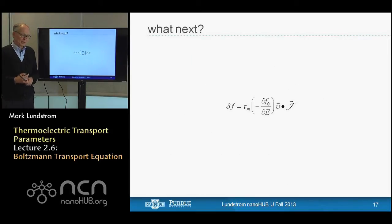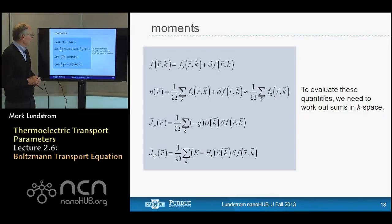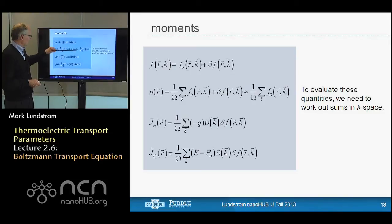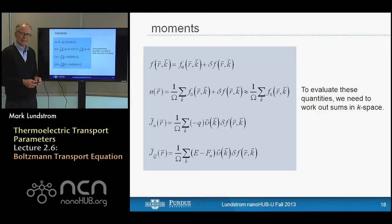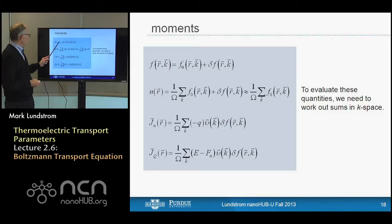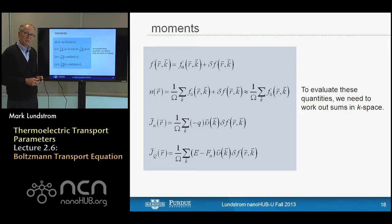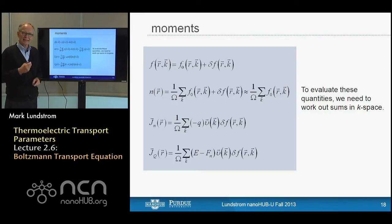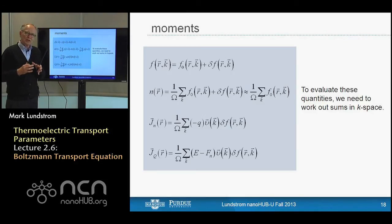Our solution to the Boltzmann equation has this form: tau_m times minus dF0/dE times velocity dot a generalized force. One of the things you'll notice is that there's more mathematics involved than in the Landauer approach. The quantity with units of force is minus the gradient of the electrochemical potential, plus a quantity involving the gradient of temperature or inverse temperature — two forces that drive us away from equilibrium, just as in our earlier discussions.